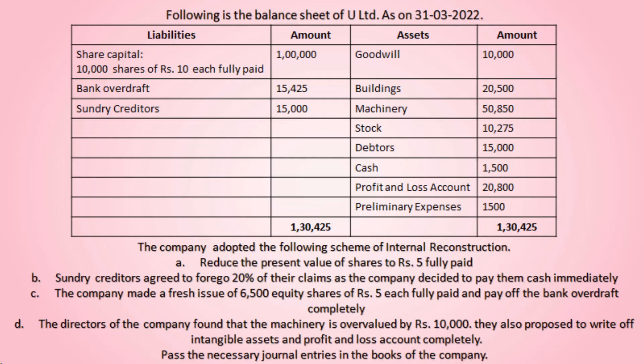Scheme one: reduce the present value of shares to Rs.5 fully paid. Scheme two: sundry creditors agreed to forego 20% of their claims as the company decided to pay them cash immediately. Scheme three: the company made a fresh issue of 6,500 equity shares of Rs.5 each, fully paid, to pay off the bank overdraft completely. Scheme four: the directors found that the machinery is overvalued by Rs.10,000.